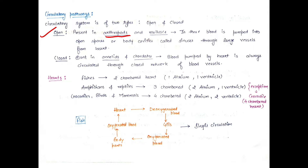The closed circulatory system is present in annelids and chordates. Here the blood is pumped through vessels — when the heart pumps, blood is transported through blood vessels. Tissues cannot be in direct contact with blood because tissues and blood are separated by vessel walls. This is called the closed circulatory system.